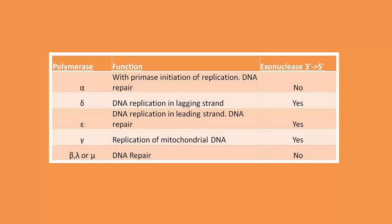From these polymerases, just delta, epsilon, and gamma have exonuclease function from 3' to 5'. This means that they can remove nucleotides if they are incorrectly matched.